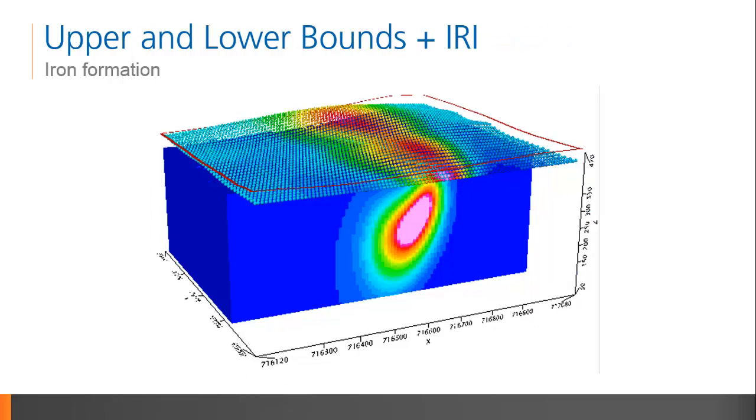We can apply some basic constraints, such as upper and lower bounds, plus the iterative reweighting method to sharpen the target. We do not expect any negative susceptibilities in this particular case, nor do we expect, from previous studies, to find susceptibilities relative to the background larger than 1 SI. The effect of applying these bounds is obvious. The target definition is much clearer, and we can deduce some dip as well.